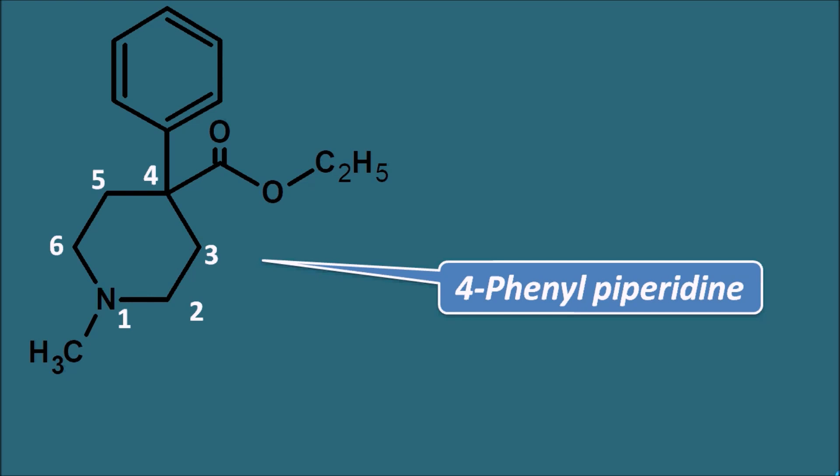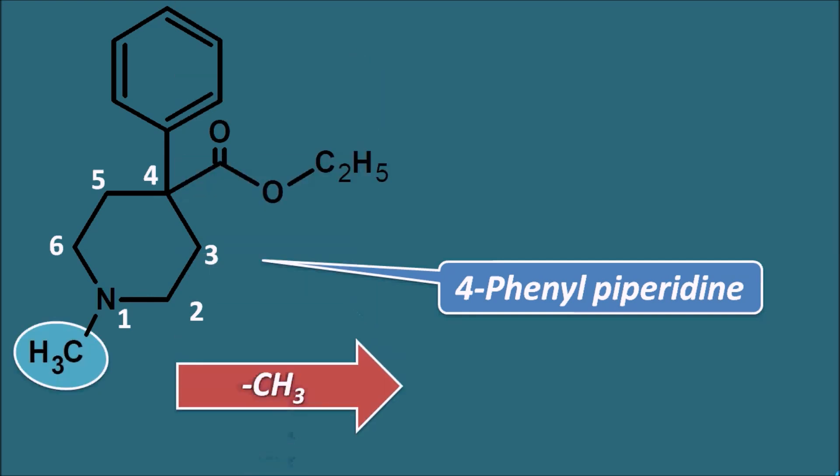In this structure we can observe side chains. The nitrogen of the piperidine ring system is attached with a methyl group. This methyl group can be removed during metabolism so that Pethidine is converted into Nor-Pethidine. Here 'Nor' indicates the N-methyl group is going to be removed.